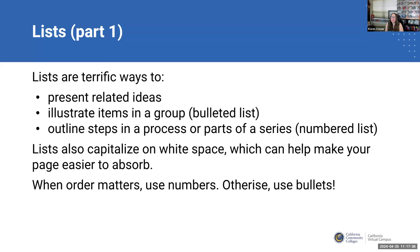You can use either bullets or numbers. If you're ever wondering when to use which, think about whether order actually matters. If the order of the list matters, use numbers — such as steps: step one, walk to your car; step two, unlock it — where the order matters. If it's just a list of items like vegetables, where order doesn't matter, use bullets. Lists capitalize on white space, which allows our students' brains to take a deep breath and absorb the material.